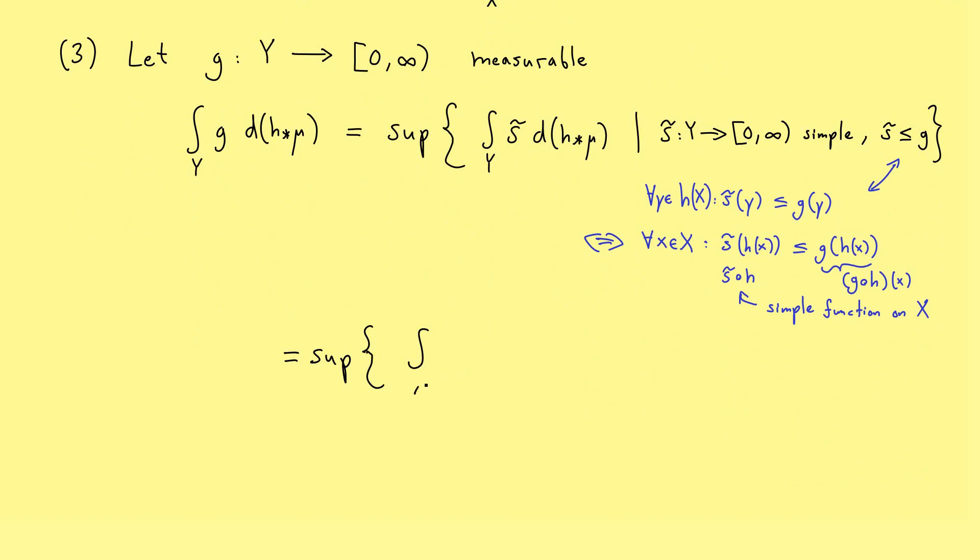Which means we have now the integration over X, and here s̃ composition with h dμ. And behind, we can now write s̃ composition with h less or equal to g composition with h. And now we can rewrite this because we know this is just a simple function on X. Hence, we could call this new simple function just s.